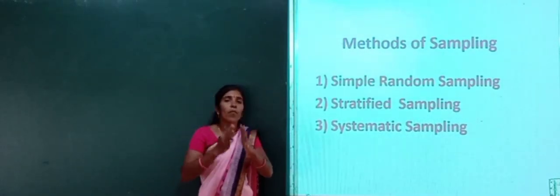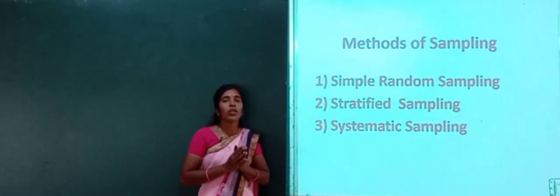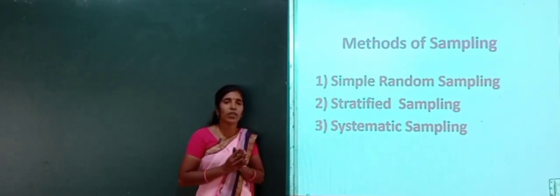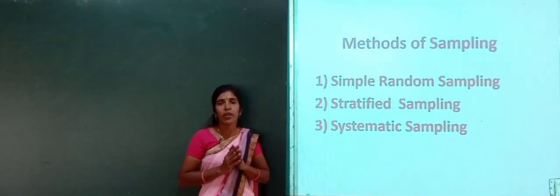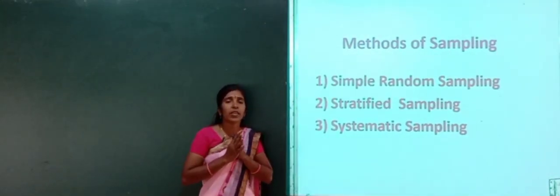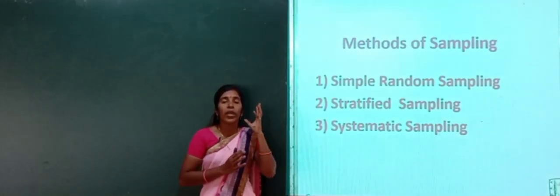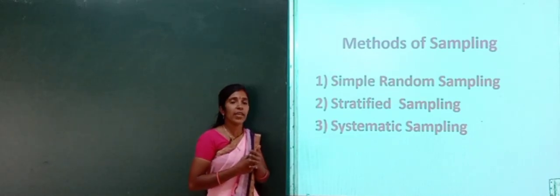From the total population, some of the units are taken for selection for our study purpose. We select some of the units and take them into consideration for doing our project. We select a sample from the total population for the purpose of our study. These are called the methods under sampling.